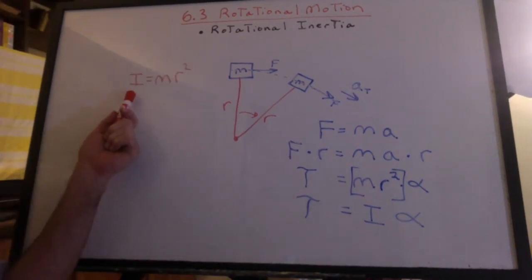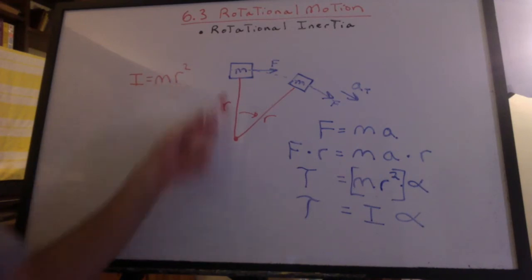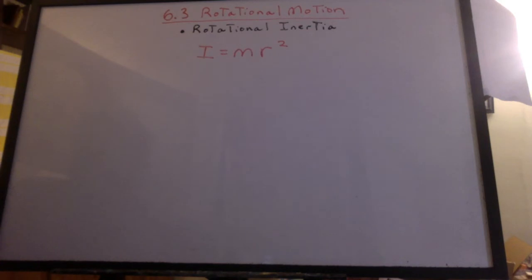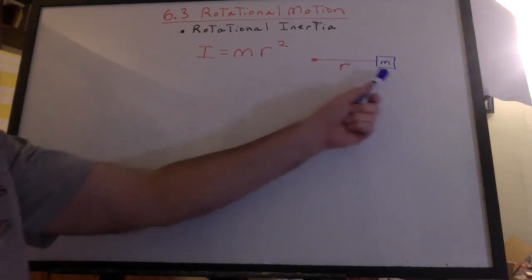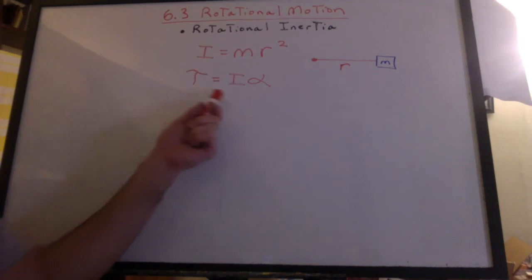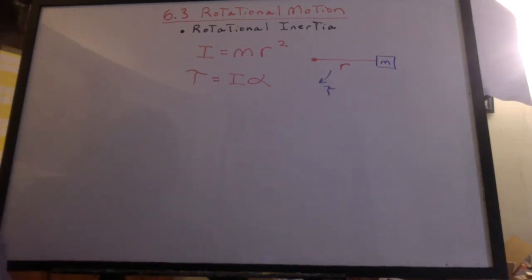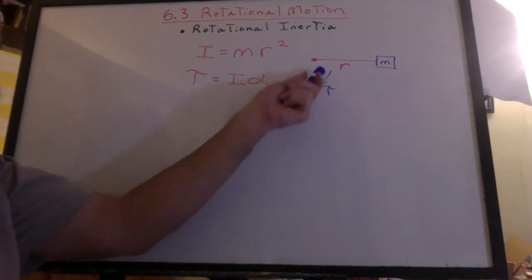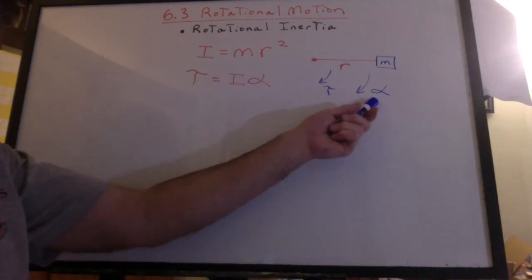So here we have the formula for rotational inertia if this mass is at radius r. I equals mr squared. That's the rotational inertia if the mass is at a distance from the pivot. And we have torque equals I alpha. If we apply a torque to this system, it will undergo an angular acceleration.